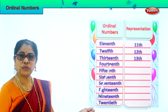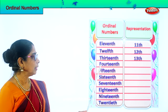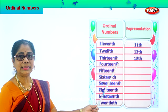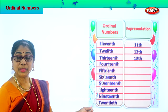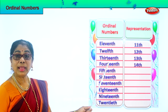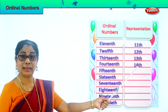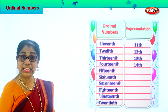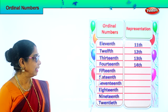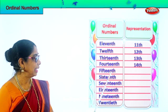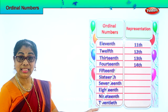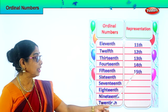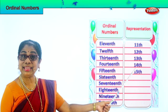Now this is fourteenth. Look at the spelling: F-O-U-R-T-E-E-N-T-H. How do you represent fourteenth? Write number 14 and TH at the side: 14th. Now we have fifteenth. Spell fifteenth: F-I-F-T-E-E-N-T-H. How do you represent fifteenth? You write number 15 and write TH at the side: 15th.